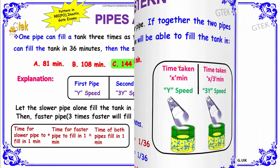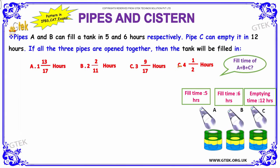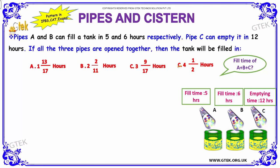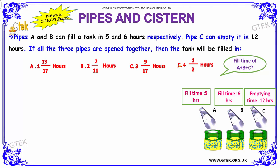Next question: Pipes A and B can fill a tank in 5 and 6 hours respectively. Pipe C can empty it in 12 hours. We have to find how much time the tank will be filled if all three pipes are open together.